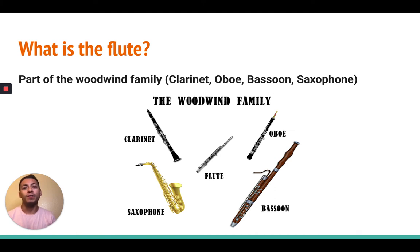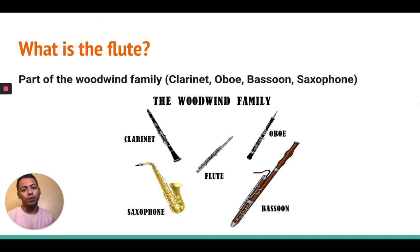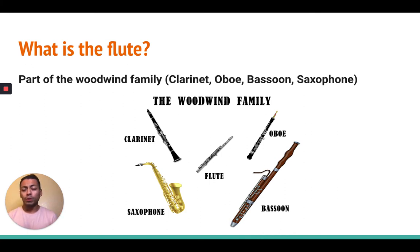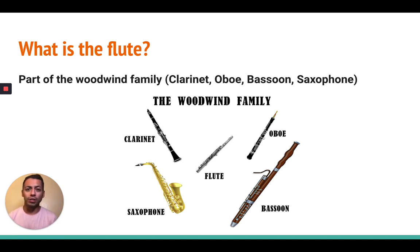So the first thing you've got to know is the flute is part of the woodwind family. As you can see, you have the clarinet, the flute, the oboe, the bassoon, and the saxophone as part of the woodwind family. Now it's not on this slide, but just so you know, the brass family includes the trumpet, trombone, tuba, euphonium, French horn — all of that. So yes, the flute is part of the woodwind family.